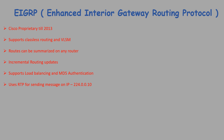EIGRP uses Cisco's Reliable Transport Protocol (RTP) to send messages and uses multicast address 224.0.0.10. The default administrative distance of EIGRP is 90, which is less than that of RIP and OSPF, meaning EIGRP routes will be preferred. The metric is calculated using bandwidth, delay, reliability, and load. By default, only bandwidth and delay are considered while reliability and load are set to zero.